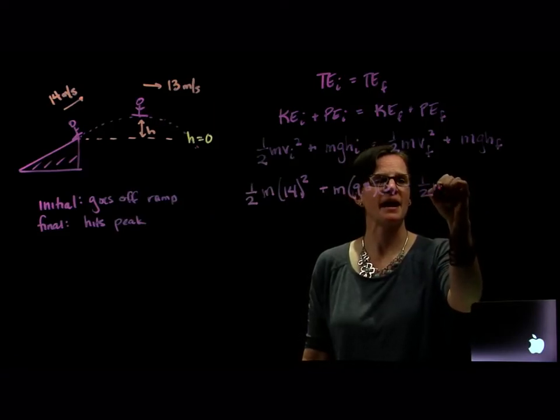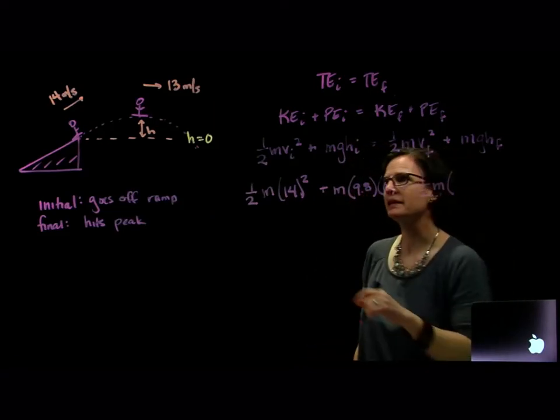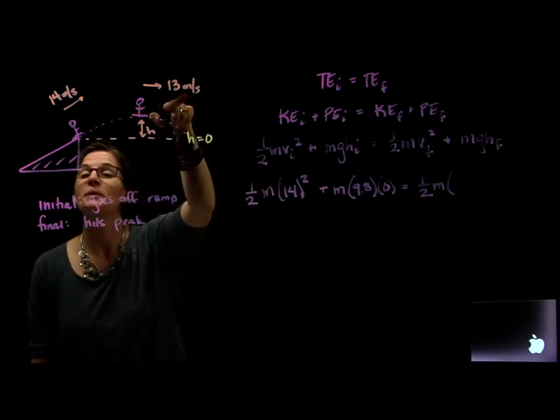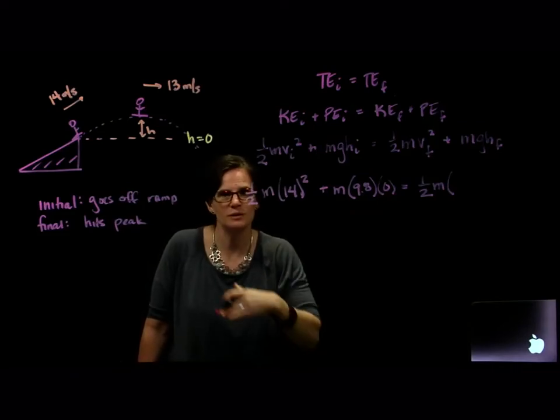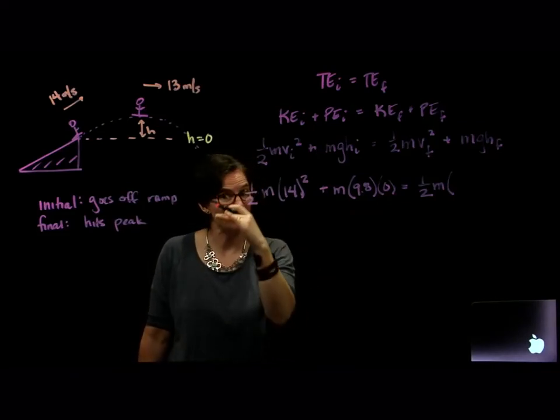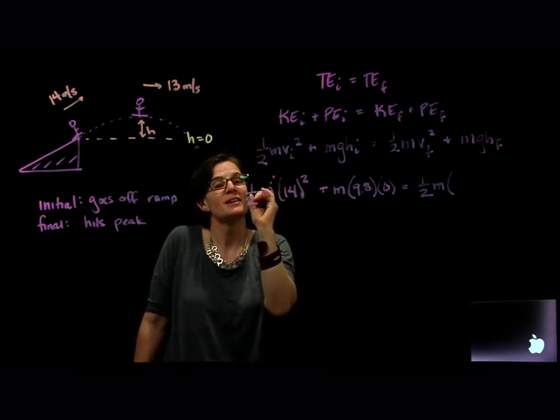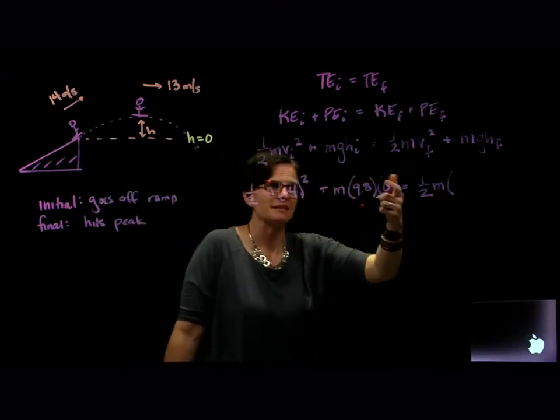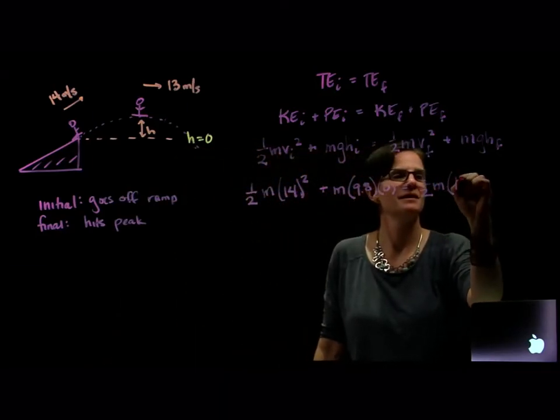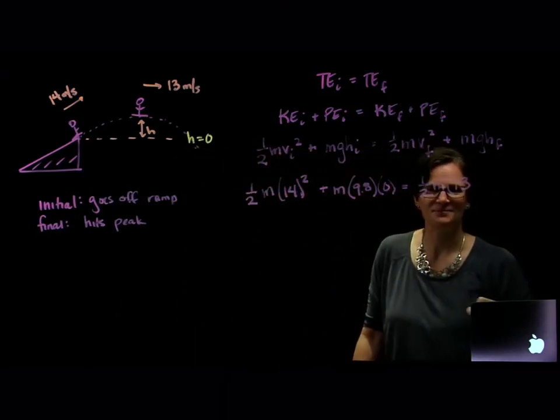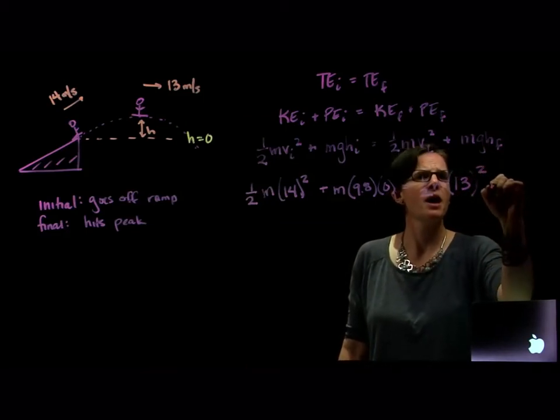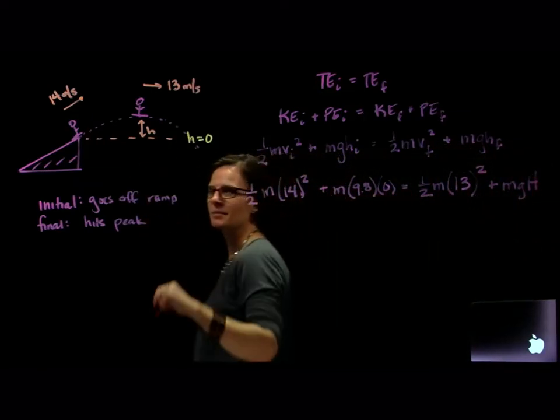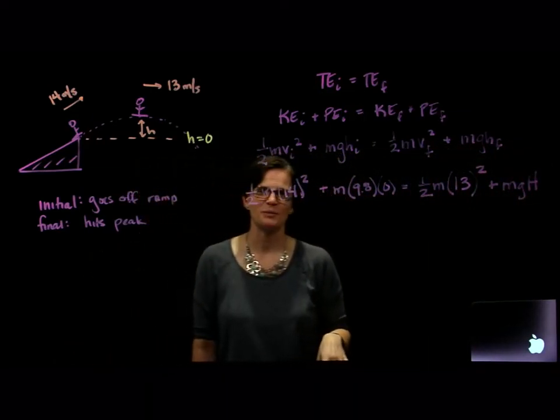All right, plus one half the mass times his final speed. Well, I'm told at the top he's going 13 meters per second. It's purely horizontal. The speed that changed was in the vertical direction. If he's going up, he's going to slow down to a vertical velocity of zero. That would help in kinematics, but I just need the speed. And he's going 13 meters per second. So that squared plus M G, and that H final is the height that I'm interested in. In the problem it's capital H.